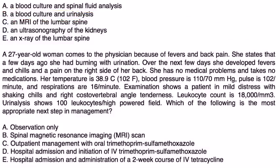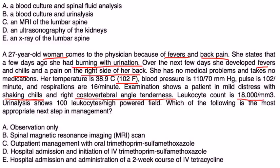A 27-year-old woman comes to the physician because of fevers and back pain. She states that a few days ago she had burning with urination, and over the next few days she developed fevers and chills and pain on the right side of her back. She has no medical problems and no medications. Temperature 102, blood pressure 110/70, pulse 102, respirations 16. Examination shows mild distress with shaking chills and right costovertebral angle tenderness. Leukocyte count is 18,000. UA shows 100 leukocytes per high power field. What is the most appropriate next step in management?